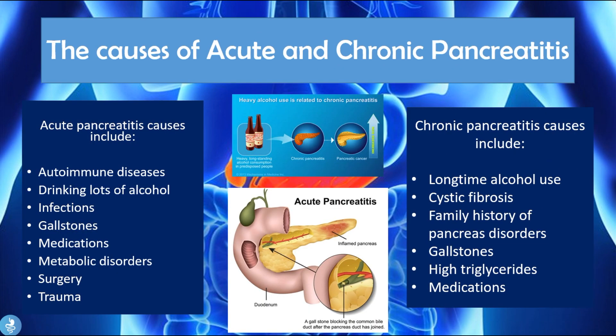Acute pancreatitis is usually caused by autoimmune diseases, drinking lots of alcohol, infections, gallstones, medications, metabolic disorders, or surgery and trauma. Anything that may inhibit the channels draining digestive juices into the intestine or affect the pancreatic organ itself may contribute to the development of acute pancreatitis.